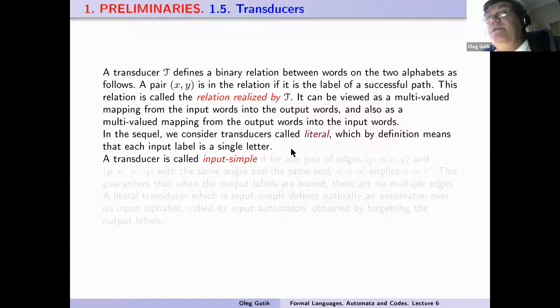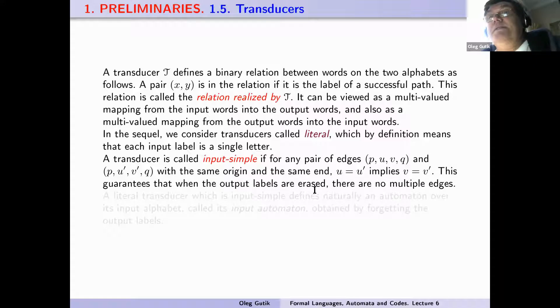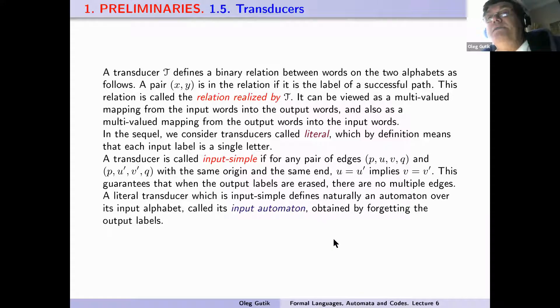In the sequel, we consider transducers called literal, which by definition means that each input label is a single letter. A transducer is called input-simple if for any pair of edges (p, u, v, q) and (p, u', v', q) with the same origin and same end, the equality u = u' implies the equality v = v'. This guarantees that when the input labels arise, there are no multiple edges.